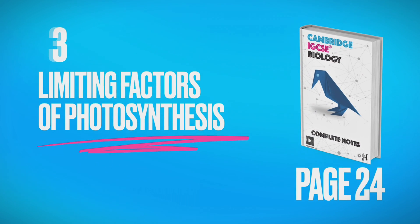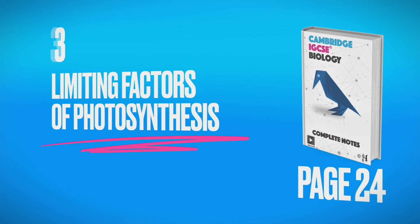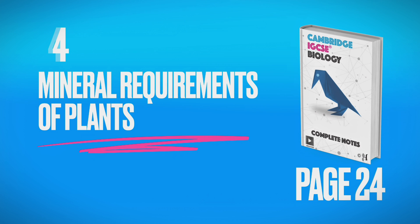Number three: the limiting factors of photosynthesis. Number four: the effect of magnesium and nitrates on plants.